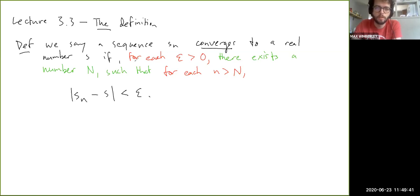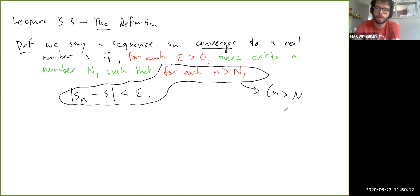First of all, notice: for each, there exists, for each. The book states it slightly differently, it's not actually different in what it means, but I'm going to state it this way. The book uses implies, but this last bit you could rephrase as n greater than N implies s_n minus s is less than epsilon. It's the same thing.